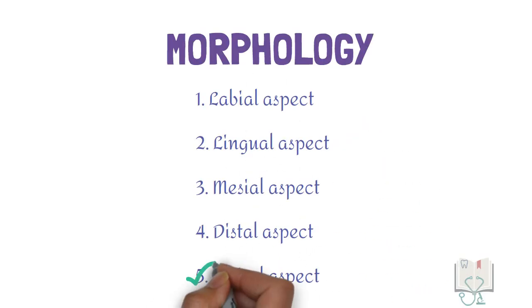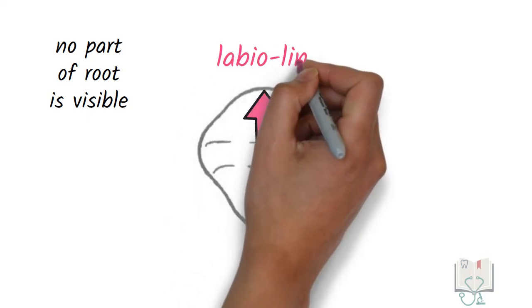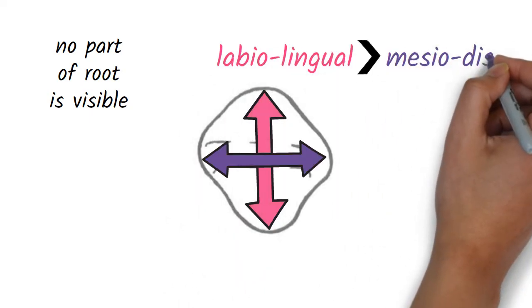Finally, the incisal aspect. As with all permanent teeth, no part of the root is visible from the incisal aspect. The labio-lingual diameter is more than the meso-distal diameter.